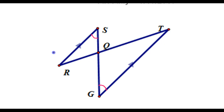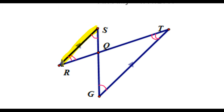In the same way, angle R is going to be congruent to angle T. Again, looking at this sort of Z formation helps you see that these two angles are alternate interior angles.